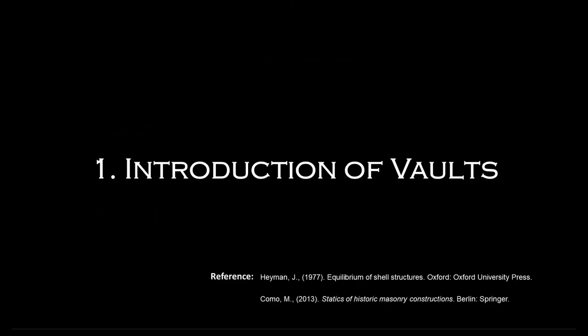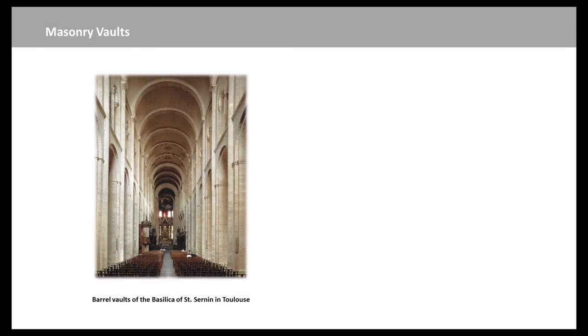The masonry barrel vault is the simplest form of a curved roof covering spaces with a rectangular plane. We have an ancient origin but began to be extensively built in the Roman and Romanesque architecture. Barrel vaults are generally thin cylindrical shells of a given profile supported at their springings.